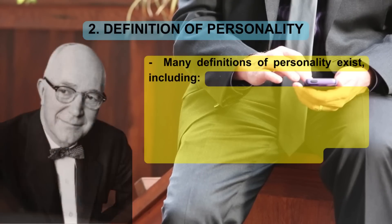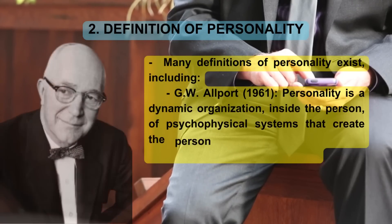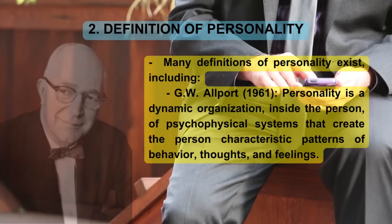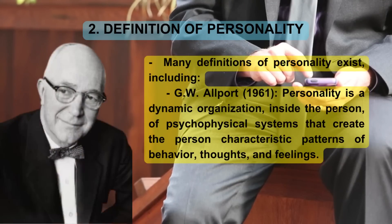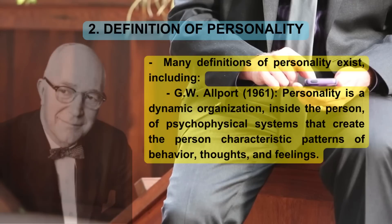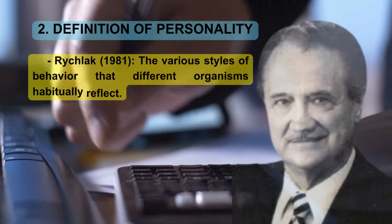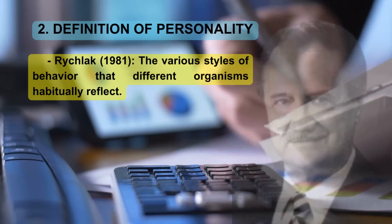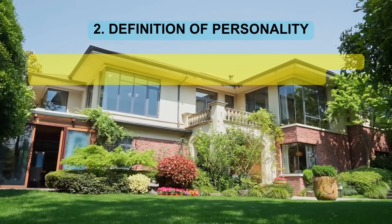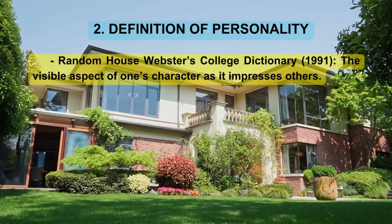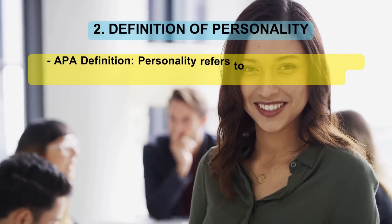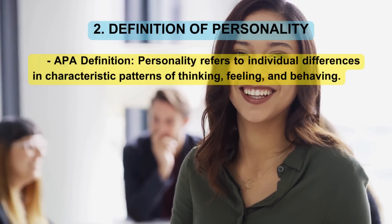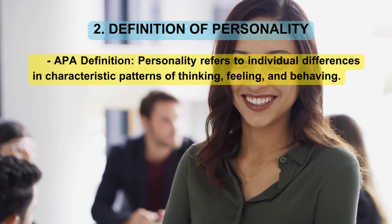Many definitions of personality exist, including: G.W. Allport (1961) — 'personality is a dynamic organization, inside the person, of psychophysical systems that create the person's characteristic patterns of behavior, thoughts, and feelings.' Rich Luck (1981) — 'the various styles of behavior that different organisms habitually reflect.' Random House Webster's College Dictionary (1991) — 'the visible aspect of one's character as it impresses others.' Overall, personality refers to individual differences in characteristic patterns of thinking, feeling, and behaving.